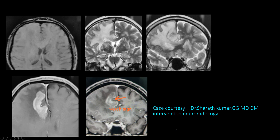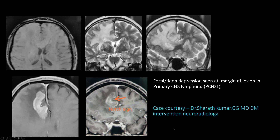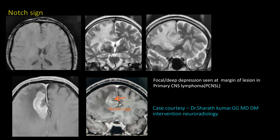This is classically described as the notch sign, seen in primary CNS lymphoma or secondary lymphomas. This is the classical notch sign — a focal deep depression seen at the margin of the lesion. Thanks to Dr. Sharath for contributing this case.